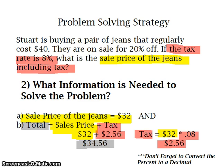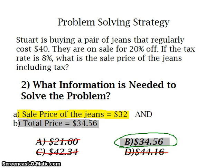32 times .08 is equal to $2.56. So to find the total price, what I am going to do is add $32 plus the tax, which is $2.56, and so my answer is $34.56. My answer choice is B, $34.56.